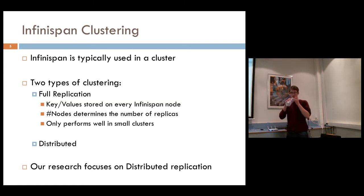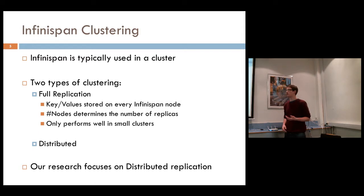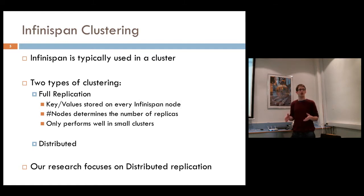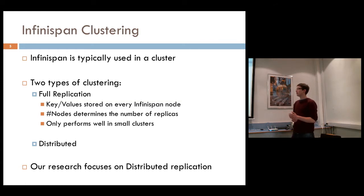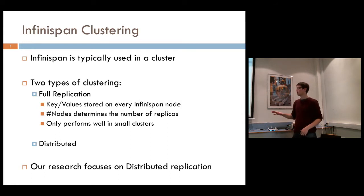There are two types of clustering. The first is full replication mode, where key values are stored on every node in the InfiniSpan cluster — good for fault tolerance but limited in scalability, because performing put operations to replicate changes across every node gets very expensive. The other mode is distributed, where key values are only stored on a certain subset of the total nodes. Our research is mainly focused on this distributed replicated mode.